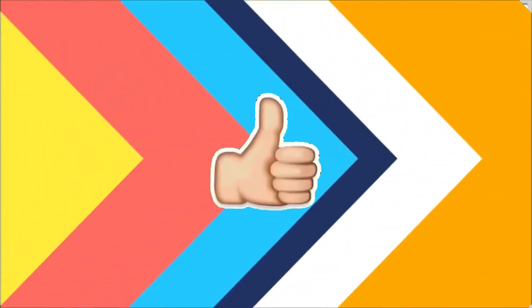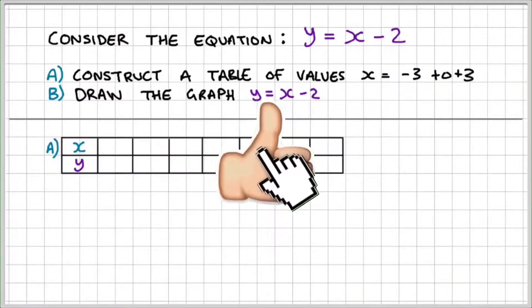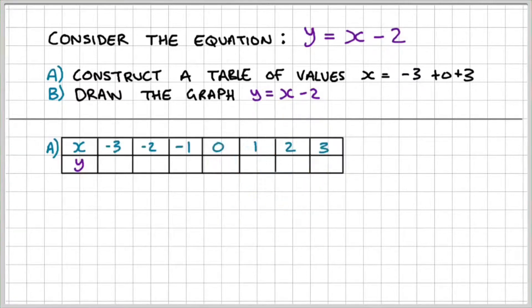So part A, I'm going to do a table of values for x and y, when x is from negative 3 all the way to 3. Let's do an example where x is negative 3. If I substitute that into the equation y equals negative 3 minus 2, that gives me a value of negative 5. So when x is negative 3, y is negative 5. And the same way, I've substituted these values to find out the rest of the values of y.